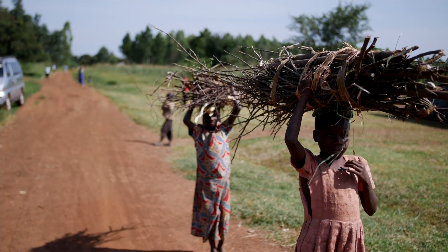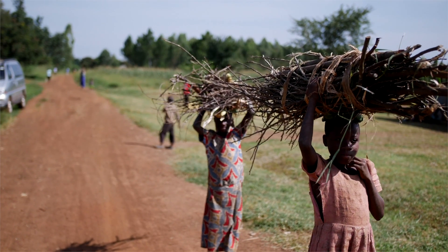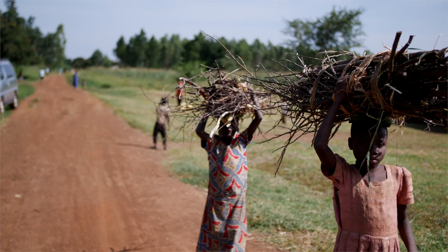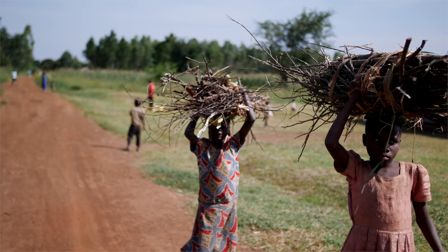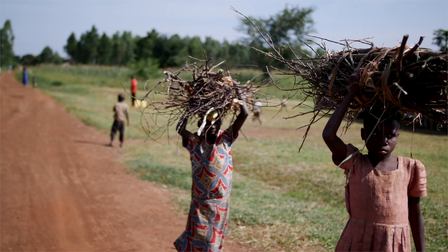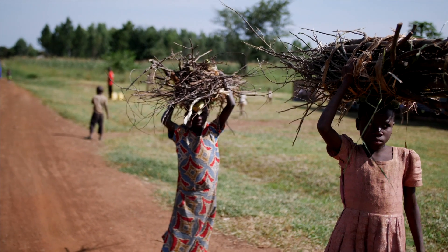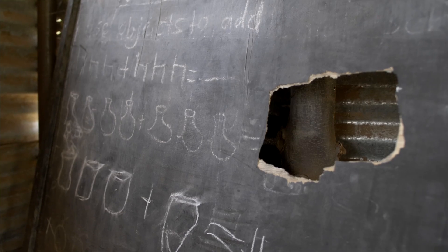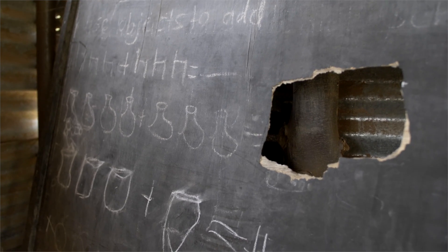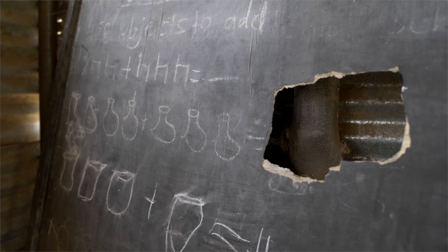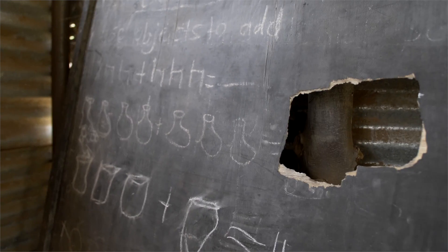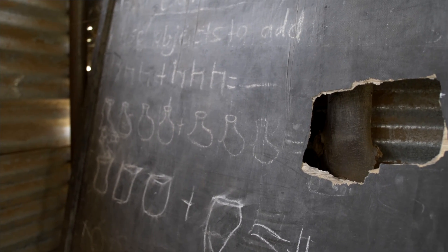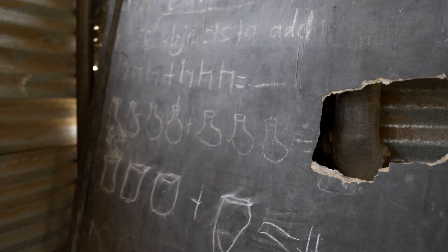Rural children are not able to attend school because they have to work, care for siblings, or carry water vast distances so their families do not do without. Even when children are able to attend school, there is nearly a 70% national dropout rate during primary school years.